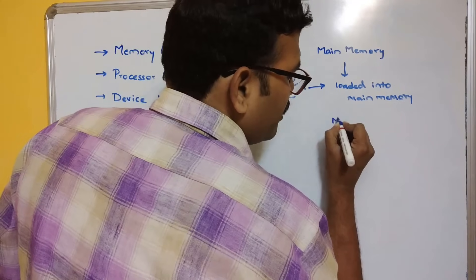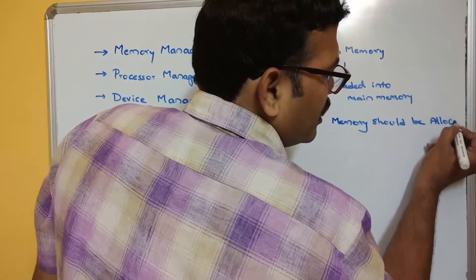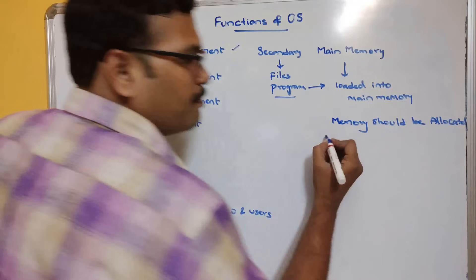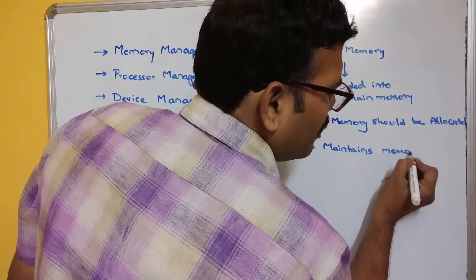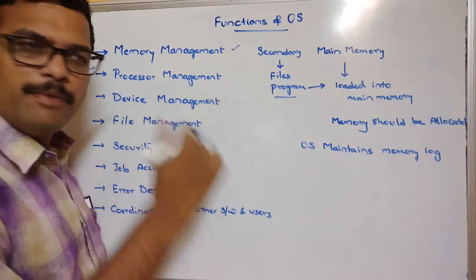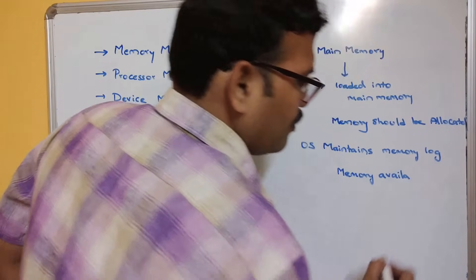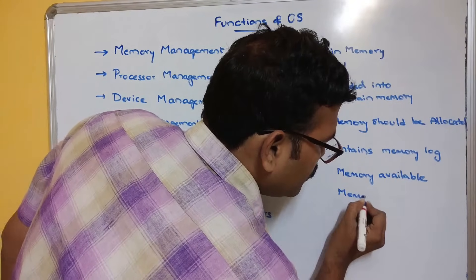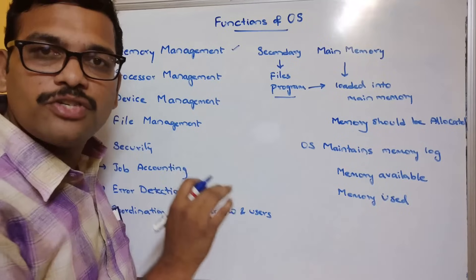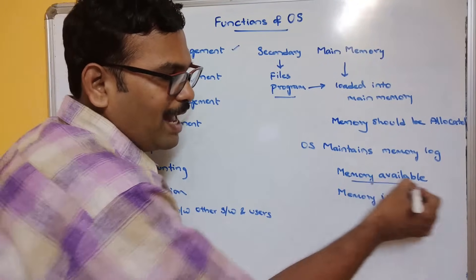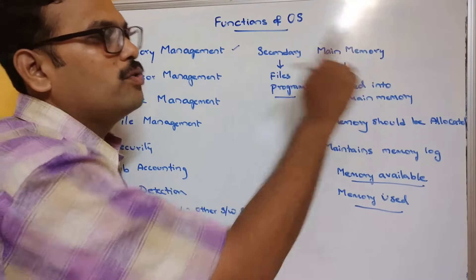When loading a program or process into main memory, some memory should be allocated for it. The operating system maintains a memory log, which means it keeps tracking which memory is available and which memory is already used. Whenever the OS wants to allocate memory for a process, it first needs to know which memory is available and which is already allocated.